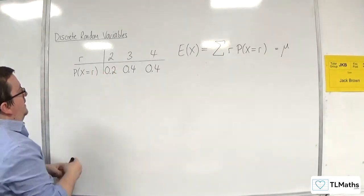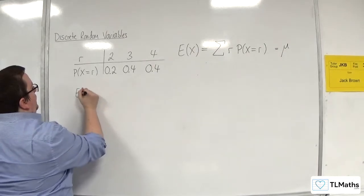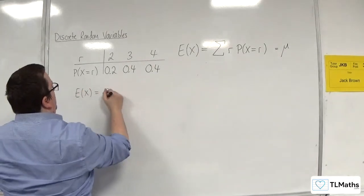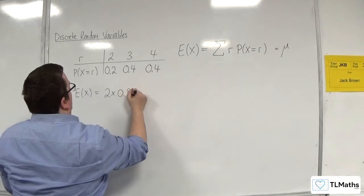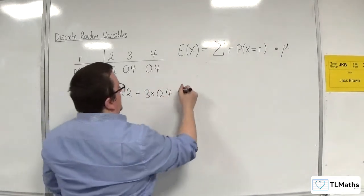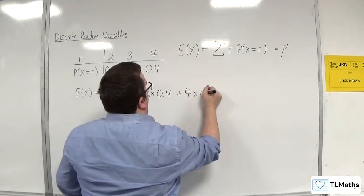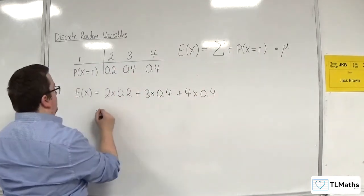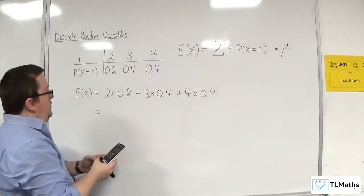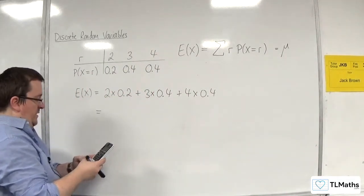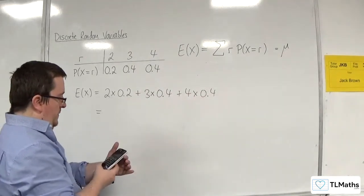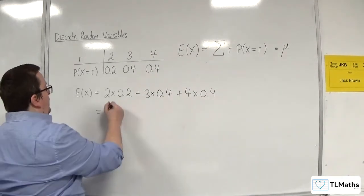In our case, E of x is equal to 2 times 0.2, plus 3 times 0.4, plus 4 times 0.4. Working that out: 2 times 0.2 plus 3 times 0.4 plus 4 times 0.4, and we get 3.2.